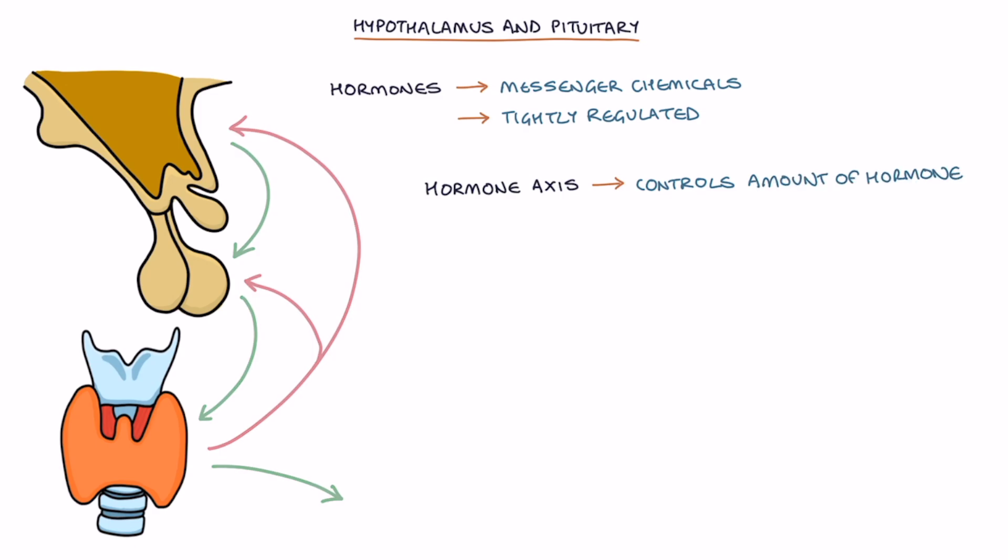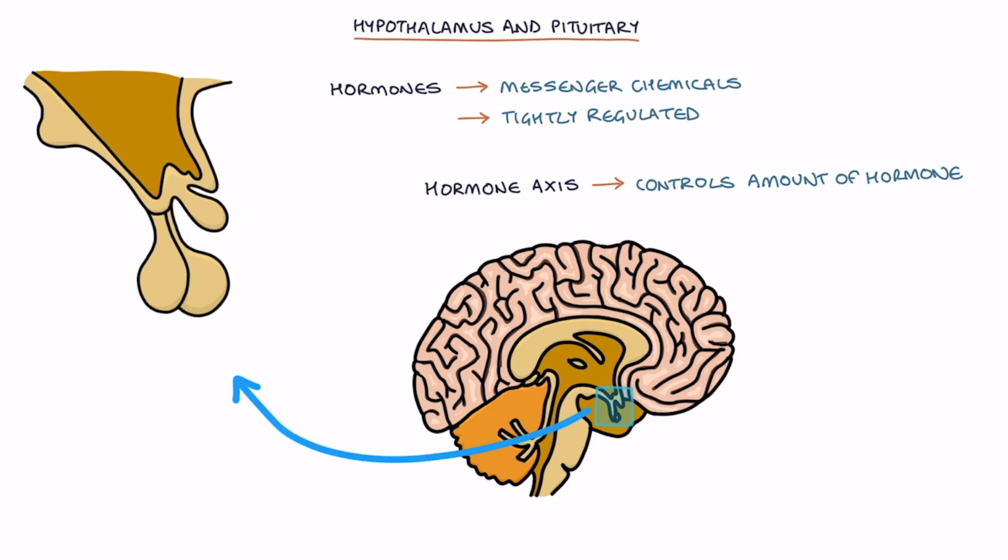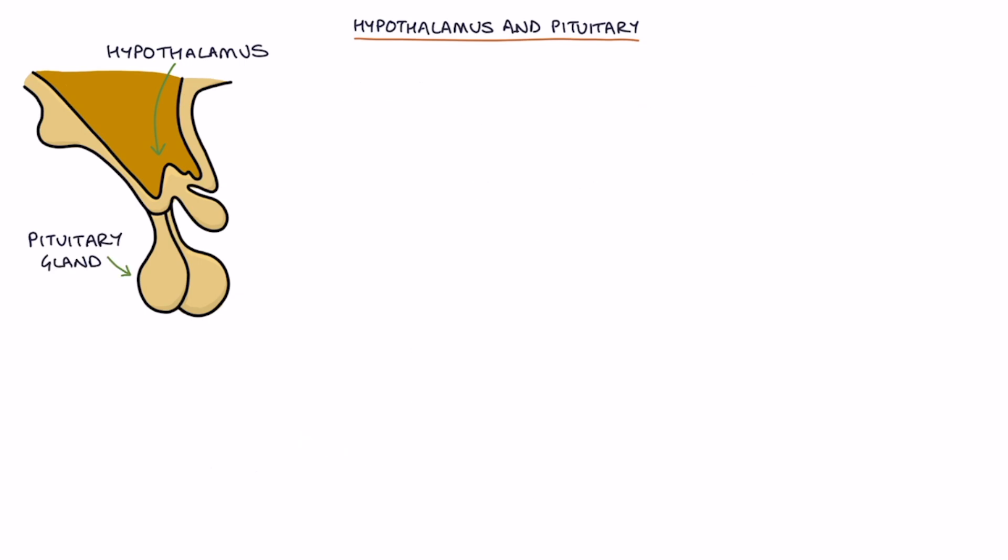Most hormones in the body are controlled by two structures in the middle part of the brain called the hypothalamus and the pituitary gland. The hypothalamus sits above the pituitary gland and releases hormones that stimulate the pituitary gland. The pituitary gland releases hormones in response. This way the hypothalamus controls the pituitary.